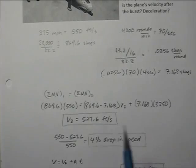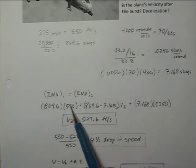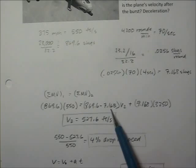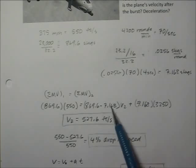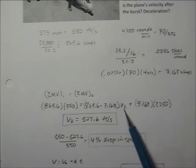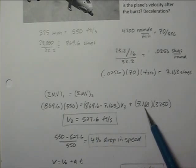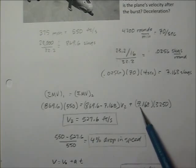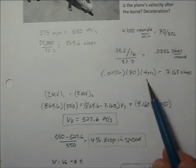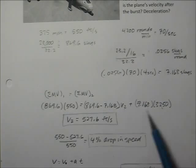Setting up the momentum equation: beginning momentum equals ending momentum. The beginning momentum is the total mass of the airplane and ammunition (869.6 + 7.168 slugs) times 550 feet per second. That equals the mass of the airplane after firing (869.6 minus 7.168 slugs) times the ending velocity, plus the mass of the ammunition (7.168 slugs) times the muzzle velocity of 3,250 feet per second.